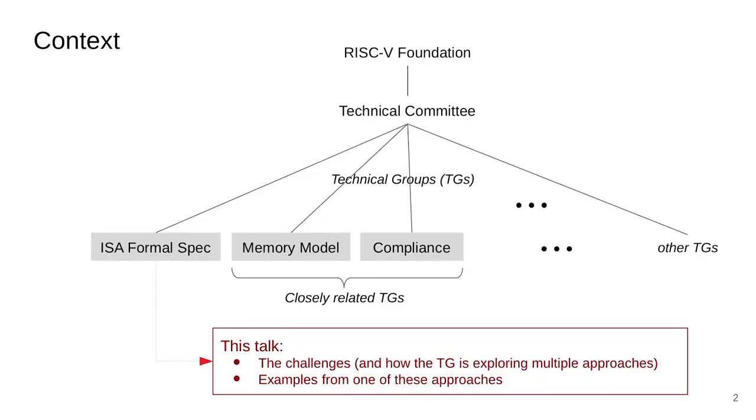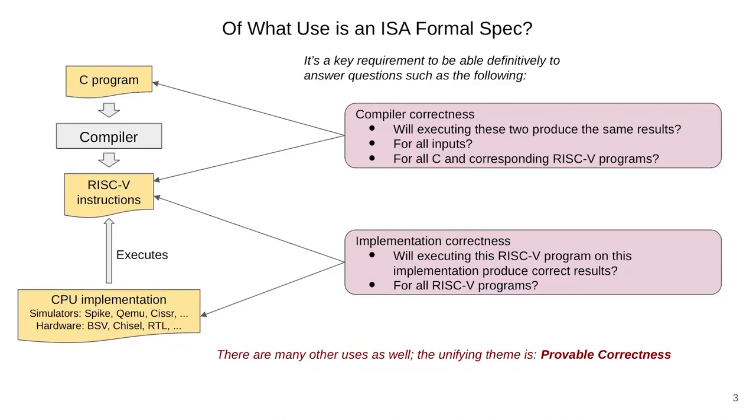This talk is going to discuss the challenges involved in creating such a specification document — precise and complete — and how this technical group is exploring multiple approaches. As an example, we're going to go into one particular implementation written in elementary Haskell, which will be about half the talk. The unifying theme is provable correctness.